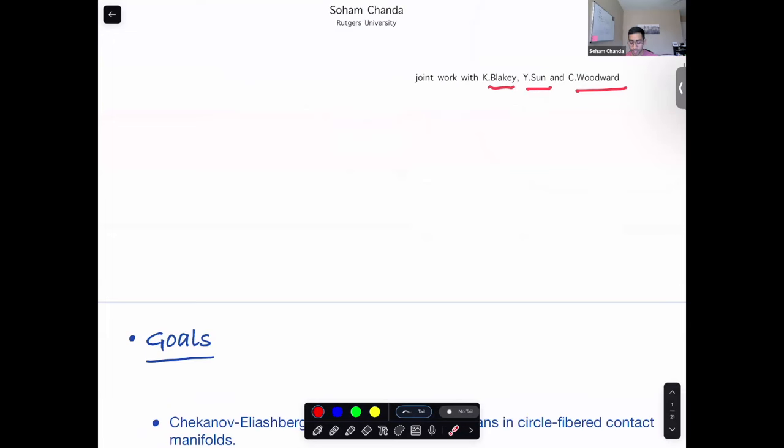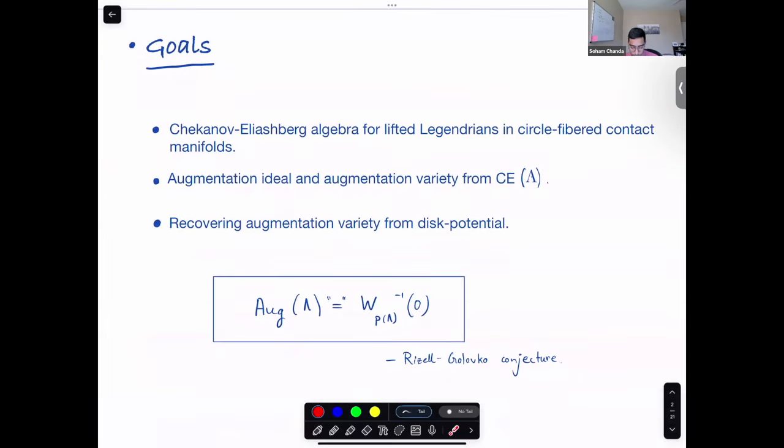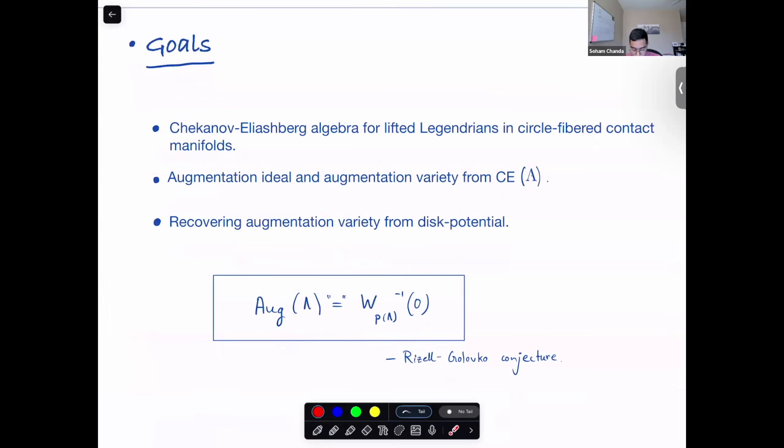There are three key takeaways I want you to get from today's talk: we construct Chekanovic algebra for lifted Legendrians in circle-fibered contact manifolds, and we also construct the augmentation ideal and augmentation variety from these Chekanovic algebra in this setup. You have also heard of circle-fibered contact manifolds as pre-quantum bundles.